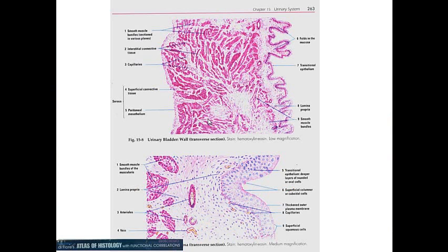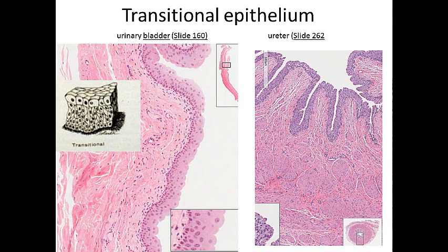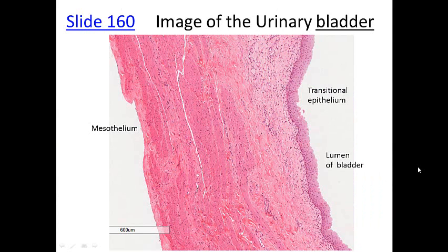In the urinary bladder we have transitional epithelium. It has this kind of floccular, bulging appearance. You can see the bulginess of cells on the surface, and it's found in the ureter as well — both are part of the urinary system with transitional epithelium. Looking at the wall of the urinary bladder, this is the lumen of the bladder, and we have transitional epithelium with these little arches at the surface and multiple layers of cells.